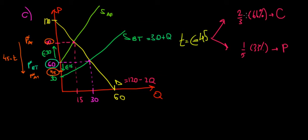That's the reason consumers are paying a higher burden — 66% of the tax — because although the price increases they react less, so they are able to support more of the burden. The producers, being more sensitive and reducing their supply by more, suffer less. Hope this makes sense and we are done.